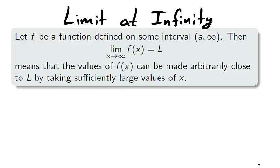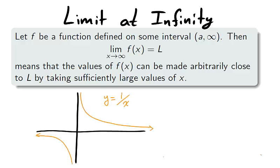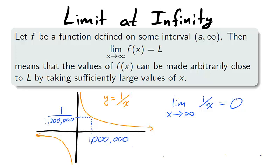If the function can be made as close to L as we would like by choosing an x value sufficiently large — take for example the function y equals 1 over x. The limit as x approaches infinity of 1 over x is 0. If I want a y value smaller than 1 tenth, I must choose an x value bigger than 10. If I want a y value smaller than 1 over 1 million, I have to choose an x value larger than 1 million.